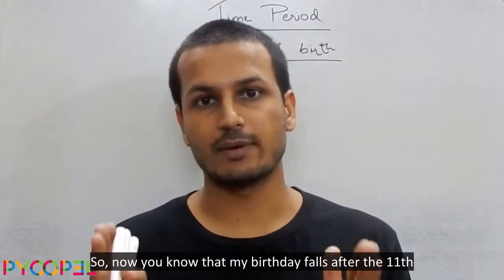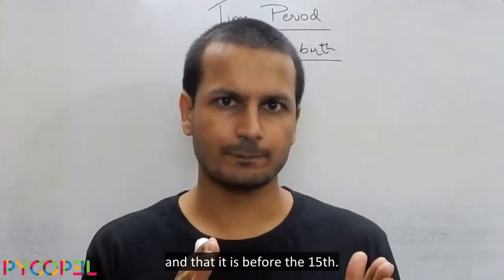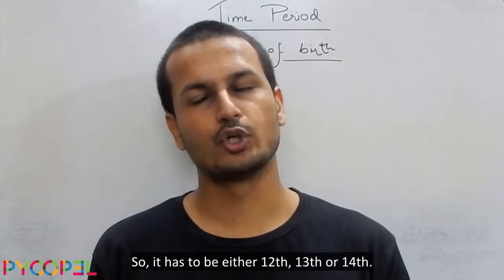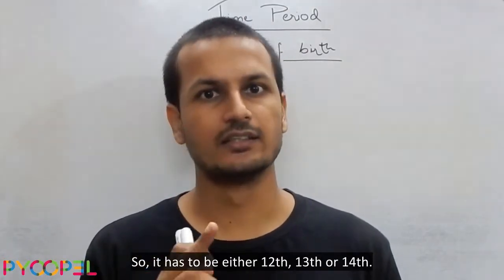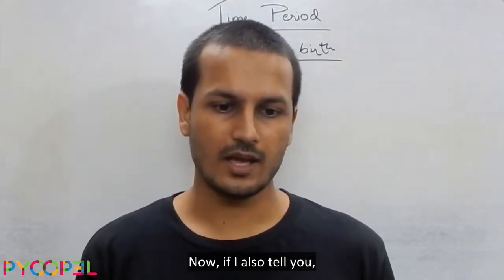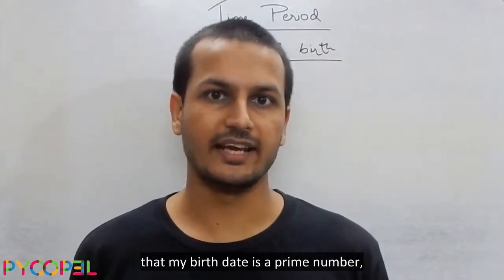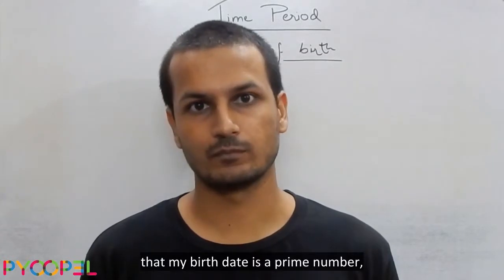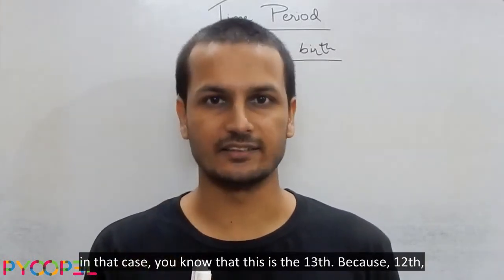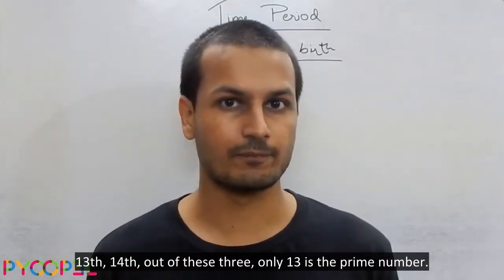So now you know that my birthday falls after the 11th and before the 15th, meaning it has to be either the 12th, 13th, or 14th. Now if I also tell you that my birth date is a prime number, then you know it is the 13th — because out of 12, 13, and 14, only 13 is a prime number.